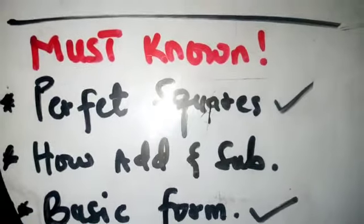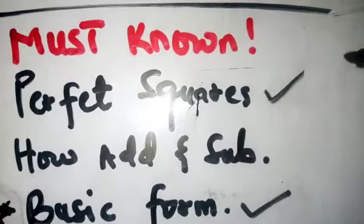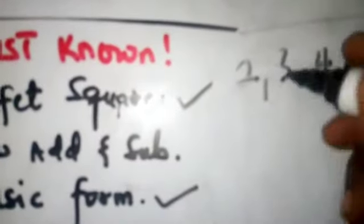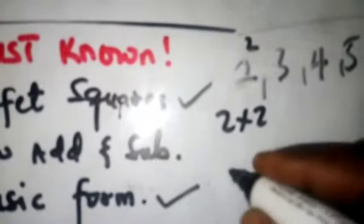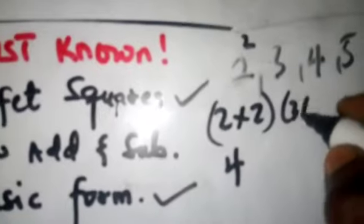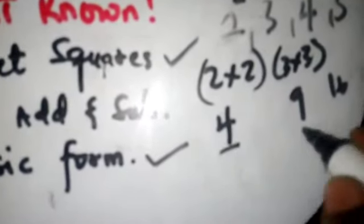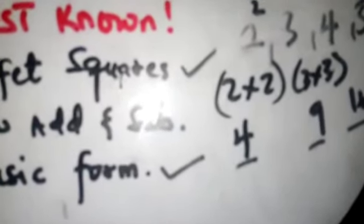To understand perfect squares quickly: starting from numbers 2, 3, 4, 5, and so on — when I square them, meaning multiply by themselves: 2 times 2 gives 4, 3 times 3 gives 9, then 16, 25, and so on. These resulting numbers — 4, 9, 16, 25, 36 — are what you call perfect squares, because squaring a whole number produces them.